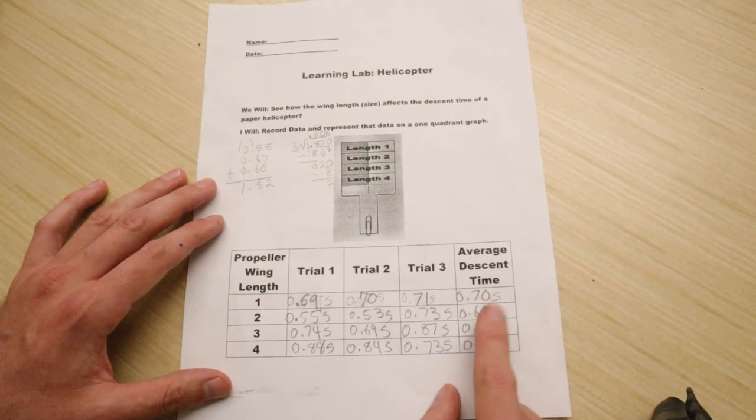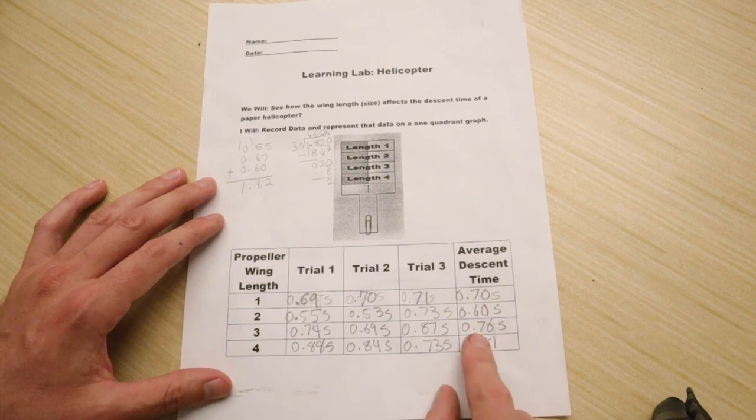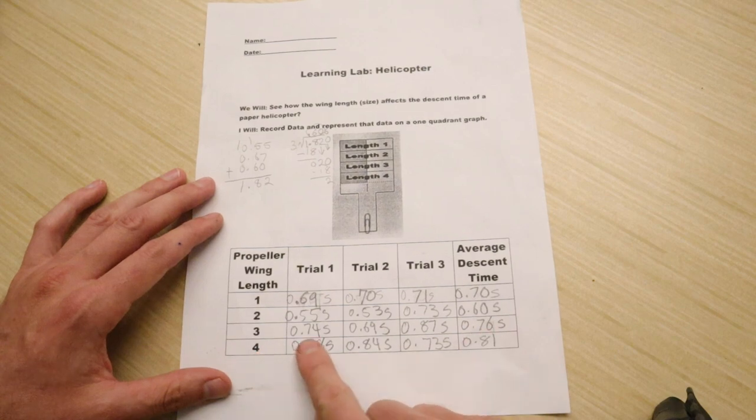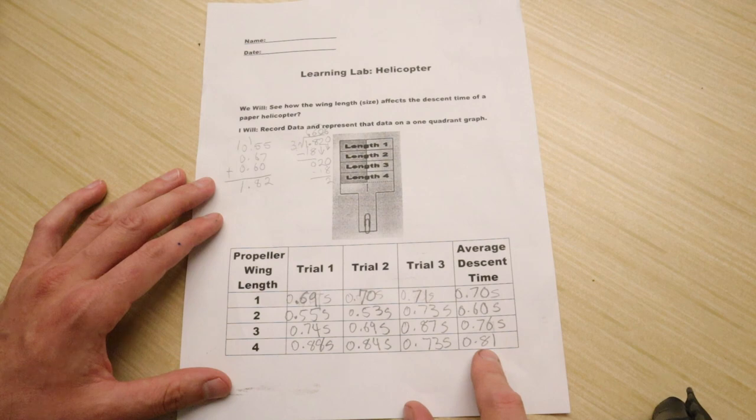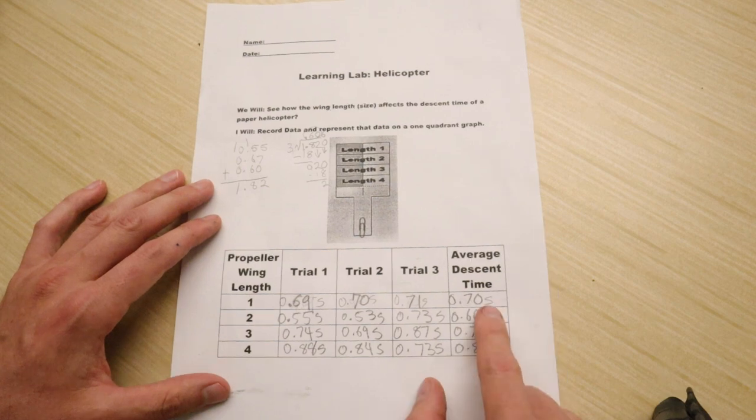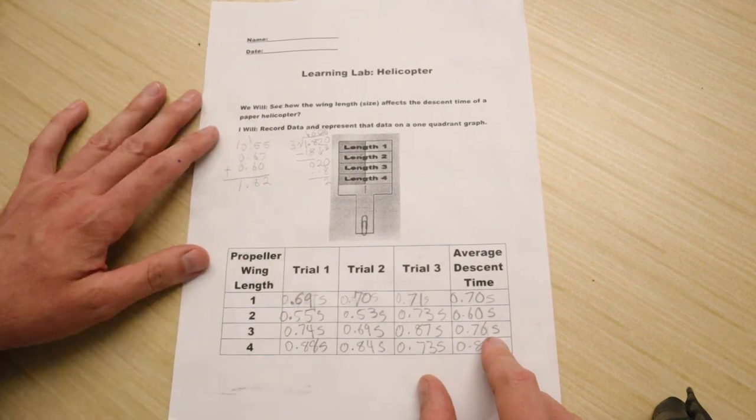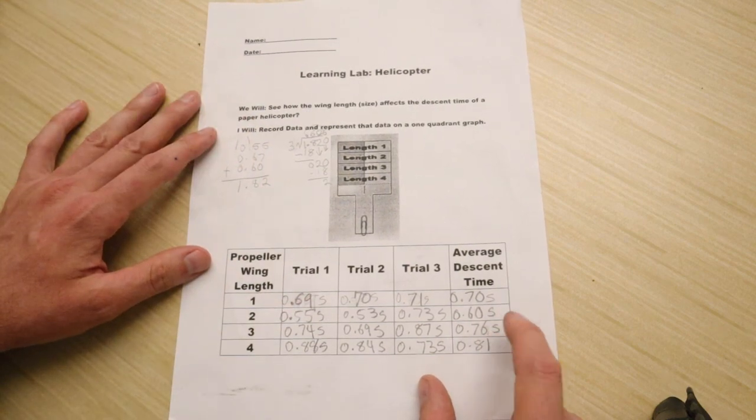But then here we go. We start getting back in the right direction. Wing size three, my average descent time was about 0.76 seconds. And then my biggest wing length, my descent time was just shy 0.19 seconds from one whole second, 0.81 seconds. And always important to put the standard unit that you're working with. And we're not working with hours or minutes or any other unit of time. We're working with seconds. So S for seconds.